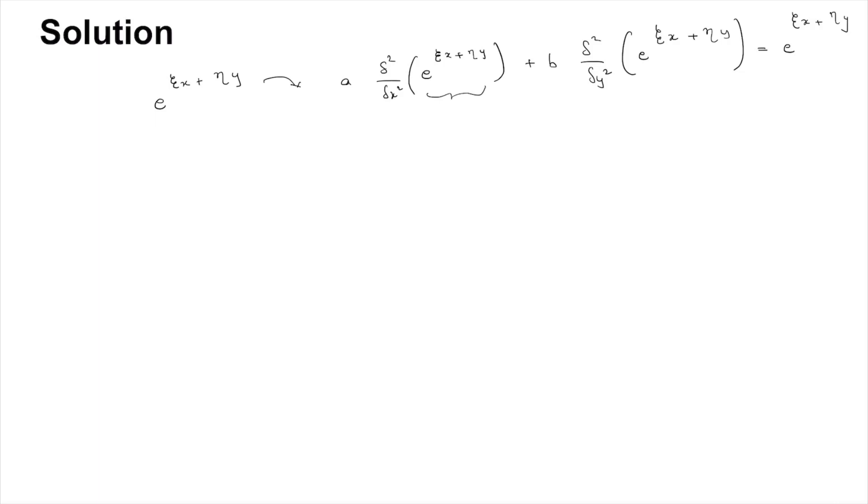So ∂²/∂x² of this is simply going to be a·zeta² e^(zeta x + eta y) plus b·∂²/∂y² of this is going to be eta² e^(zeta x + eta y), which equals e^(zeta x + eta y).